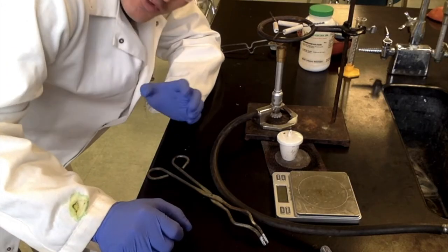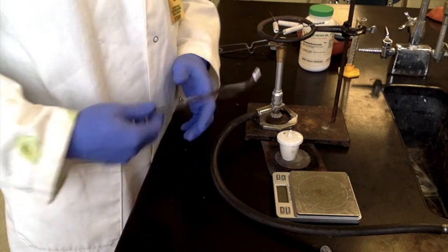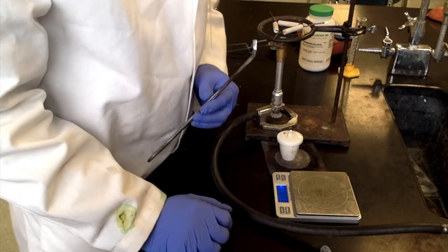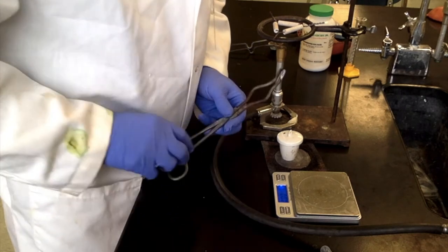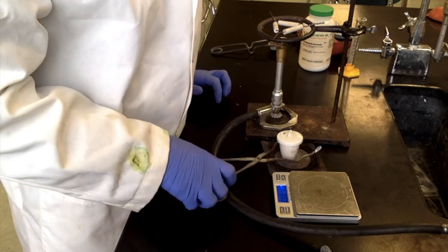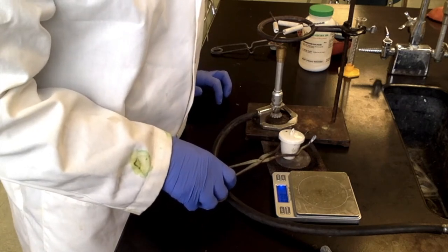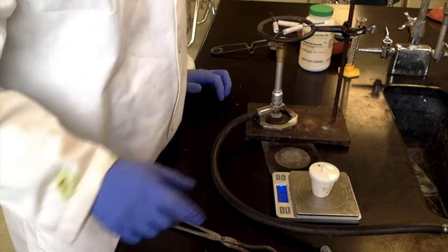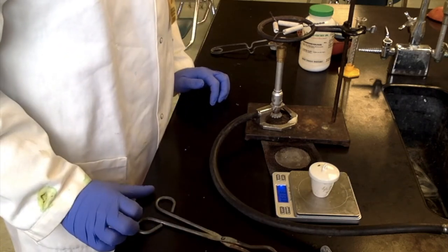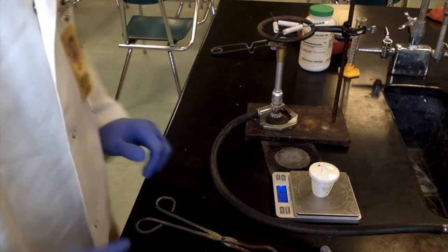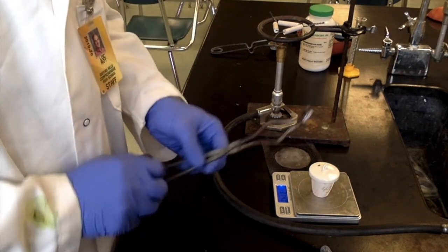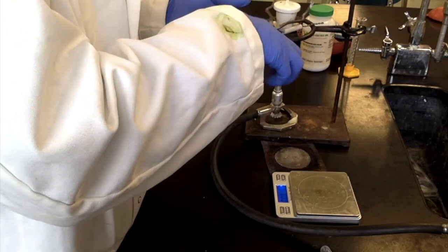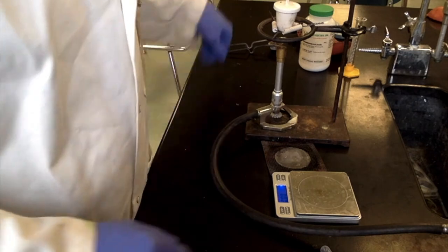All right. So it's been five minutes now and we'll see if we can get an accurate mass for the first heating. So transfer this to the balance carefully and we have 31.38 grams. Great. All right. And we'll take that right off of there and we'll go for the second heating.